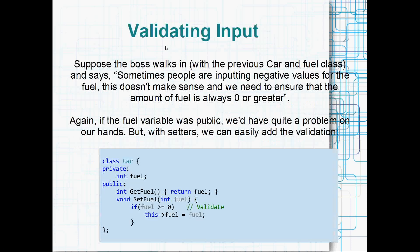On to a few more examples. One other way to use getters and setters is to validate input. If the boss says that some people are inputting negative values for the fuel and this doesn't make sense, you need to ensure the fuel amount is zero or greater whenever it's changed. Without a setter, you'd have to go back and find every time the fuel variable was changed throughout the code and validate it there — as many validations as there are changes. But with a setter, you just do the validation in setFuel: if fuel is greater than or equal to zero, set it; otherwise, give an error message. Validating input is a really good use for setters.